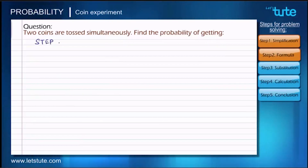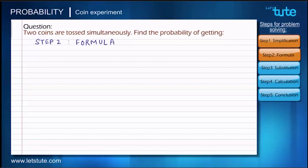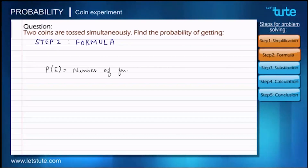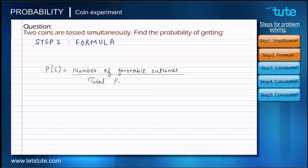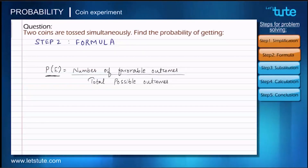Now we shall proceed to isolate the formula we are going to use in order to solve this question. Step 2 is choosing the formula. The formula to find probability of any event is the ratio of the number of favorable outcomes to the total possible outcomes. We denote the probability of any event as P(E).